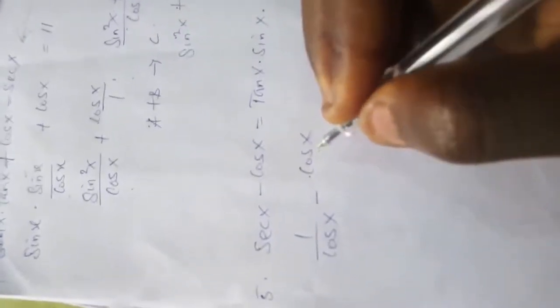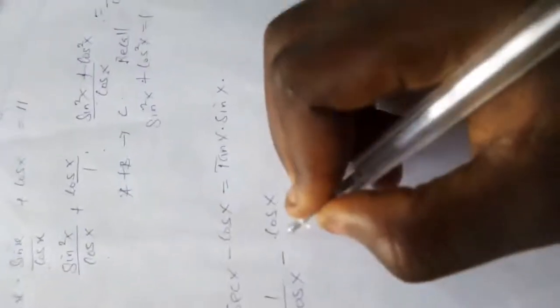So this is 1 over cos x minus cos x over 1. I hope you're following me. So the LCM here is cos x.